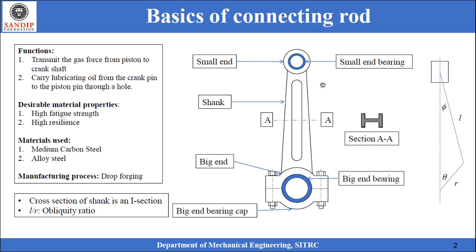A connecting rod comprises three main components: the small end, the big end, and they are connected with the help of a shank. The small end conceals a small end bearing inside it. The big end is split into two halves — one half is integrated with the shank whereas the other half is removable. This split end helps in assembling the bearing at the big end and clamping the crank pin of the crankshaft. This removable part is called the big end bearing cap, and it is clamped to the connecting rod with the help of a nut-bolt arrangement.